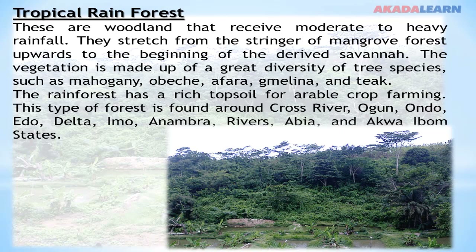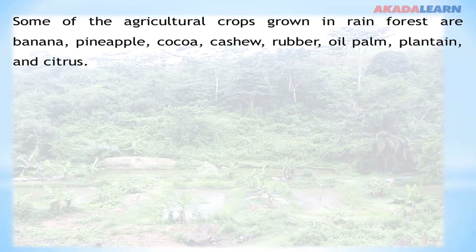Rainforest is also found in Oyo, Ondo, Edo, Delta, Imo, Rivers, Abia and Ogun states. Some of the agricultural crops grown in rainforests are banana, pineapple, cocoa, cashew, rubber, oil palm, plantain and citrus.